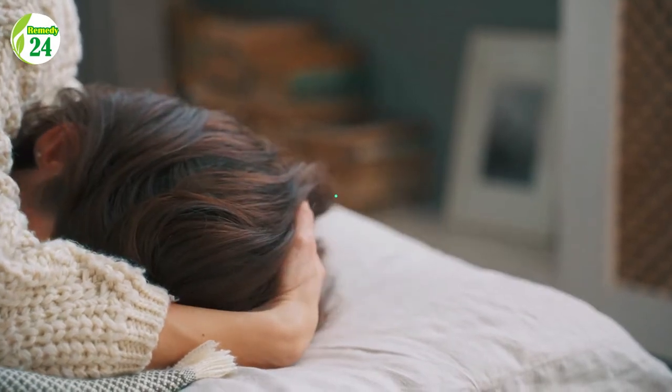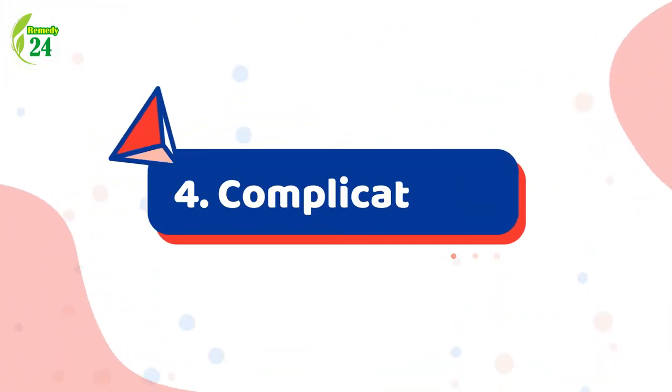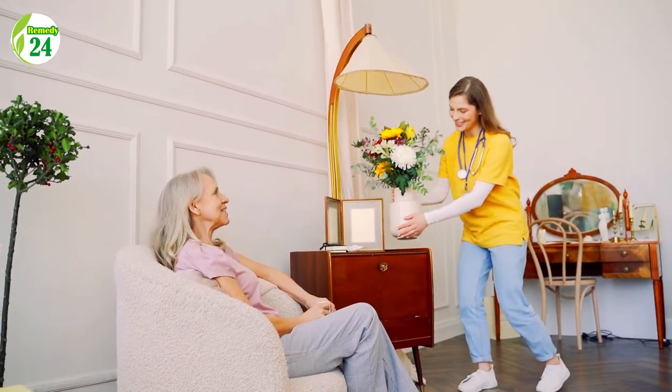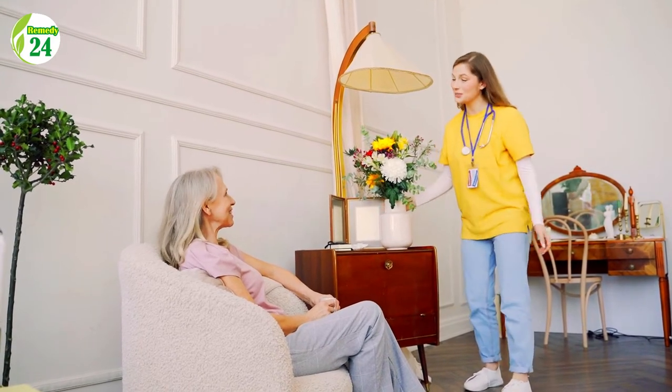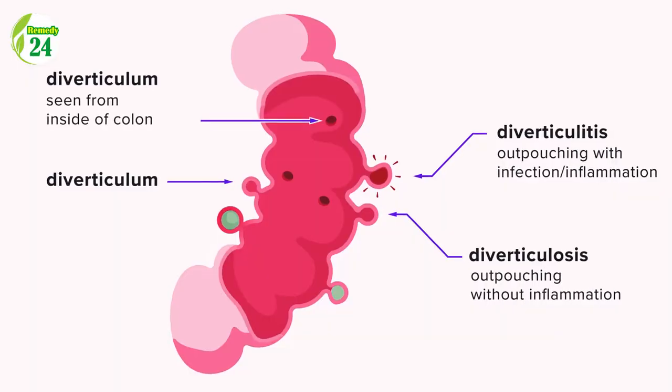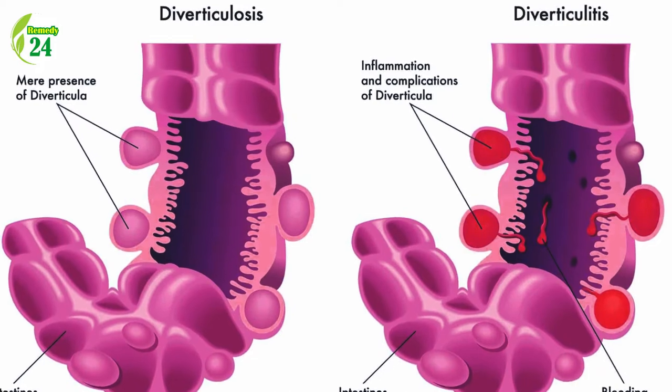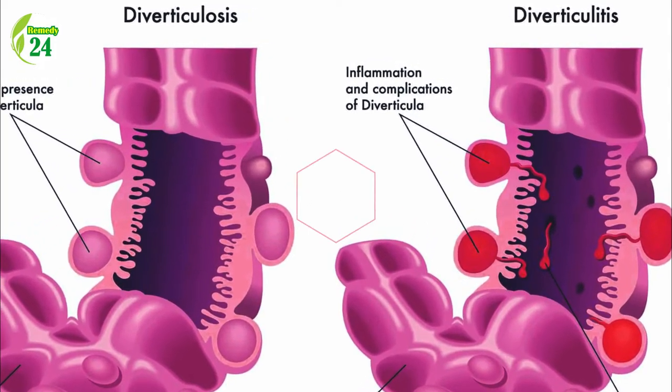Another symptom of diverticulitis is constipation, whereas diarrhea affects a smaller number of people with the condition. These warning signs should lead you to contact your doctor as soon as possible. Additionally, 25% of people with diverticulitis will develop further complications. A build-up of pus in the diverticula can result in abscesses, which have the potential to burst and release toxins into the body. Scarring of the digestive tract lining can also cause food blockages, and a fistula — an abnormal connection joining two body regions — can also develop.